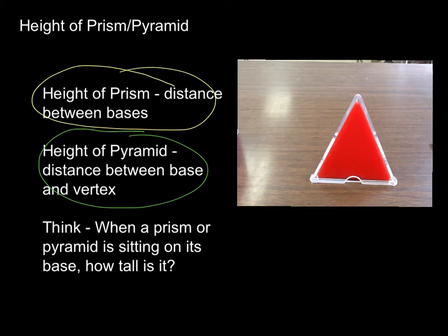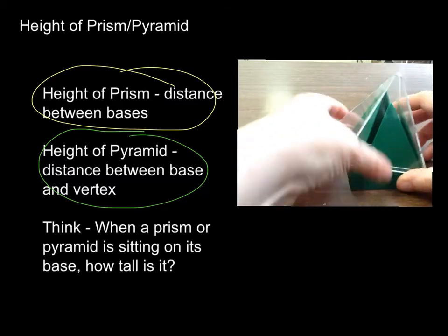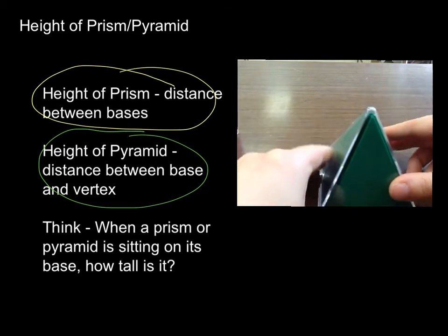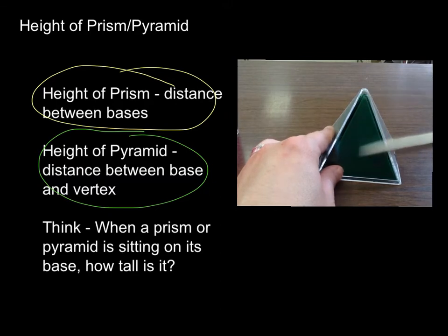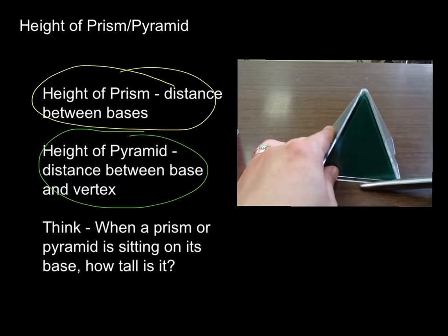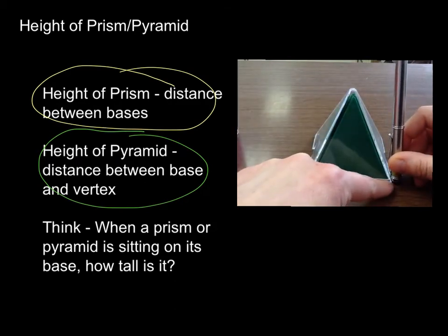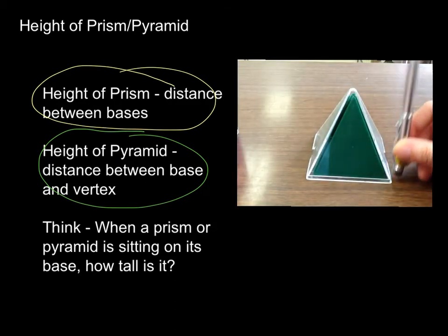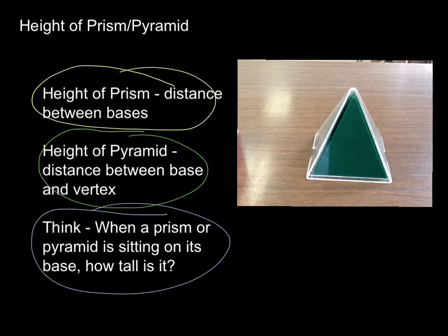We can also look at this one right here. If this is my base, what is the distance from the base to the vertex? It can't be measured right up against the slant — it has to form that 90-degree angle. So the distance from the bottom to the vertex. A helpful hint: when your prism or pyramid is sitting on its base, how tall is it? That's the height of it. Sometimes you'll see pictures where they're not always sitting on their bases.